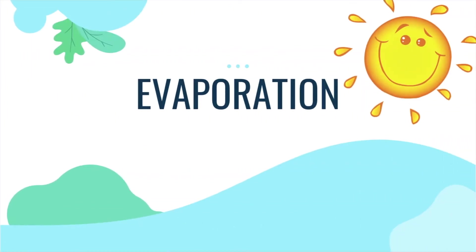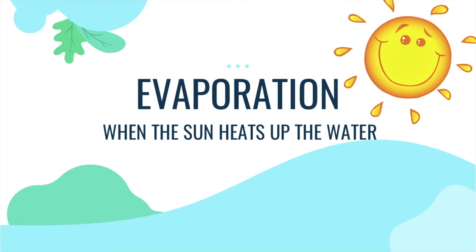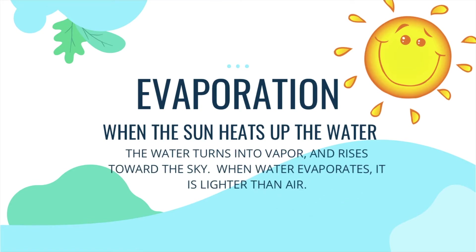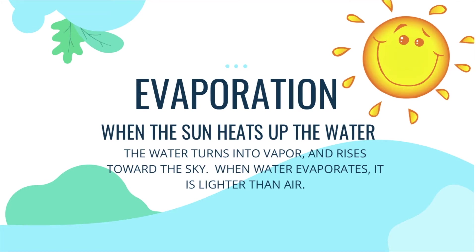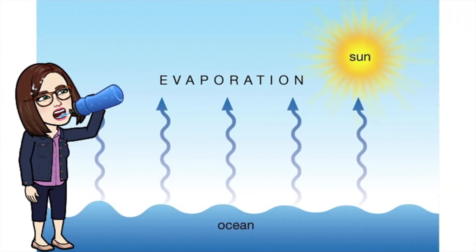We're going to start with evaporation. When the sun heats up the water, the water turns into vapor and rises toward the sky. When water evaporates, it is lighter than air. Here is a diagram of what evaporation looks like — the sun heats up the water and the water molecules rise.